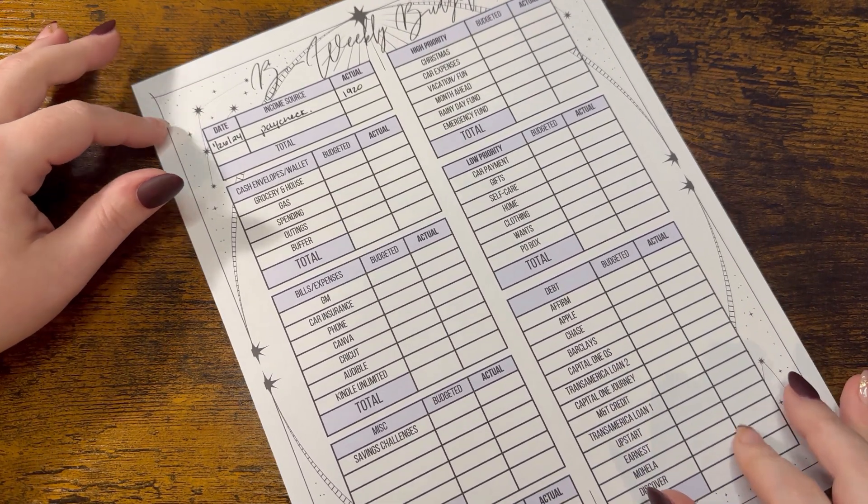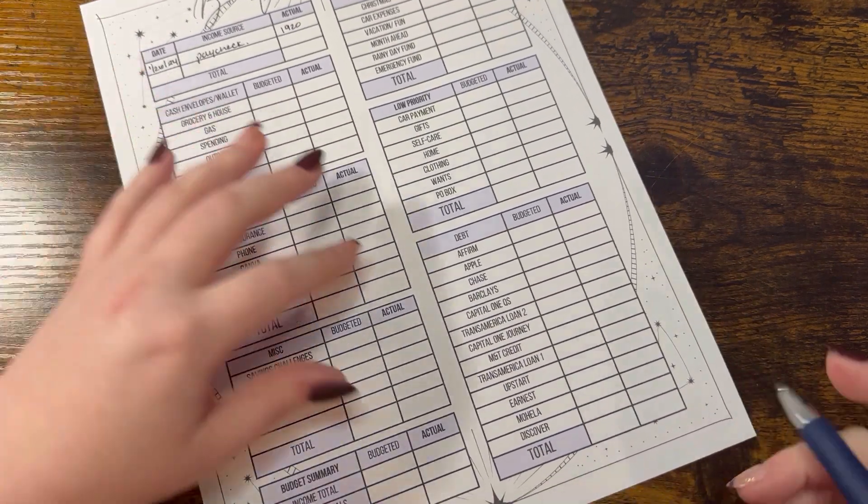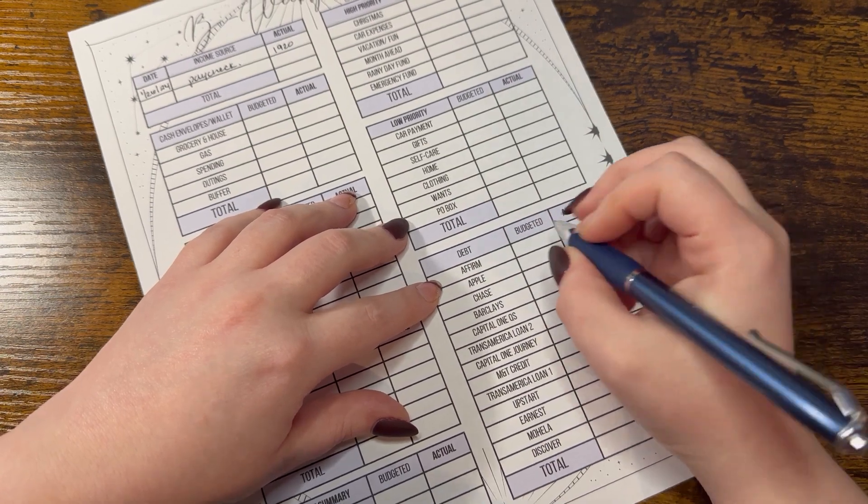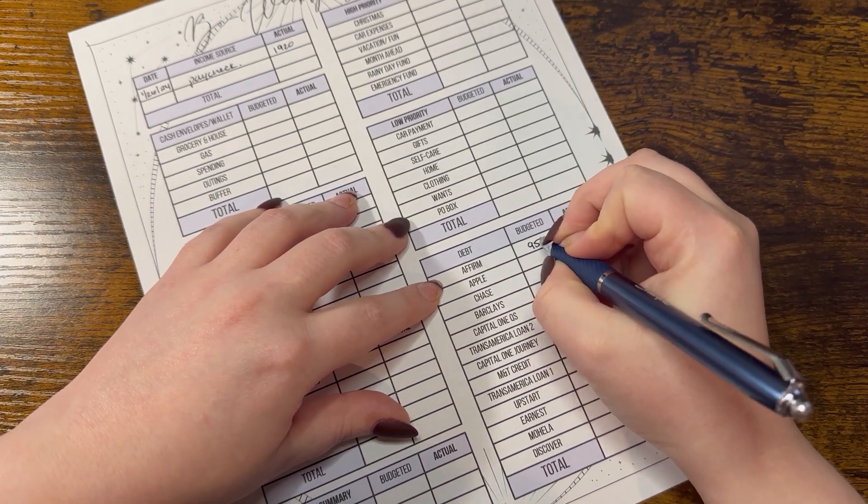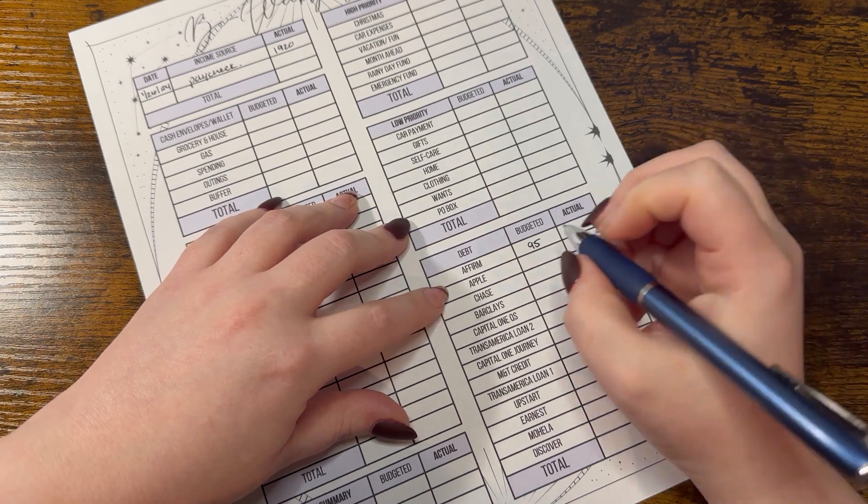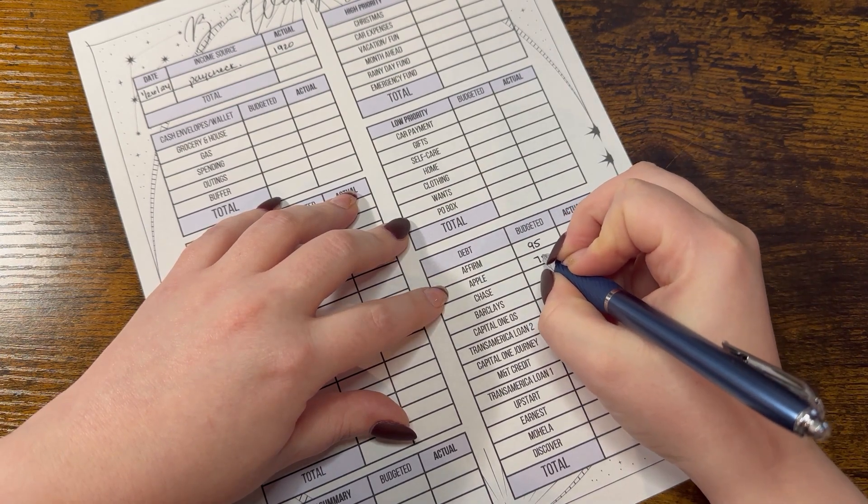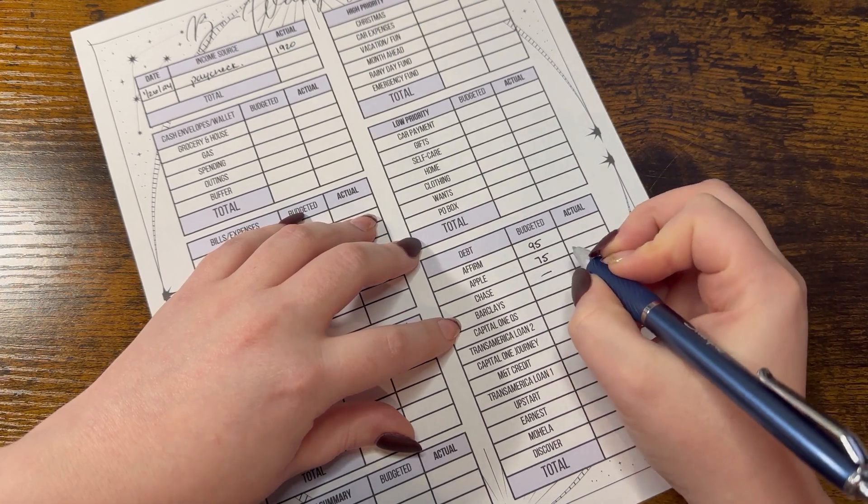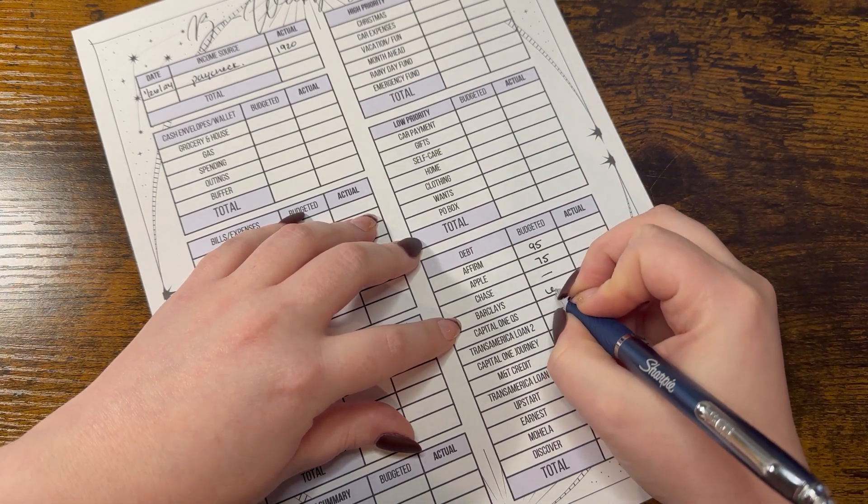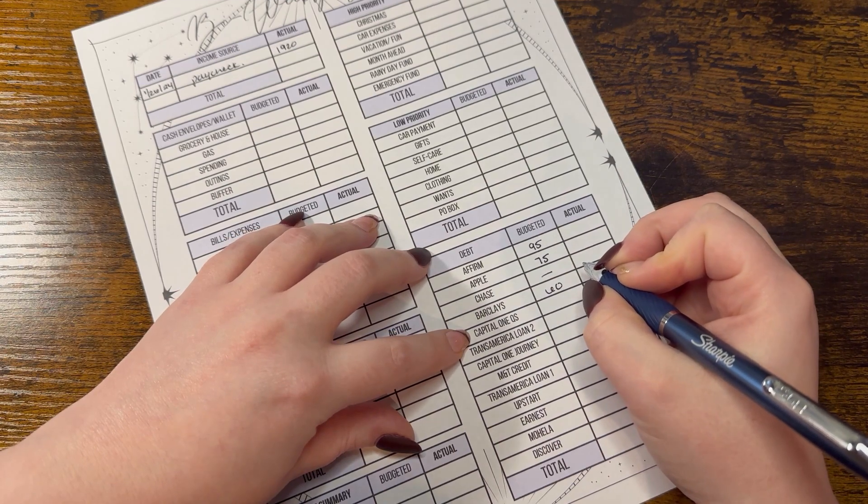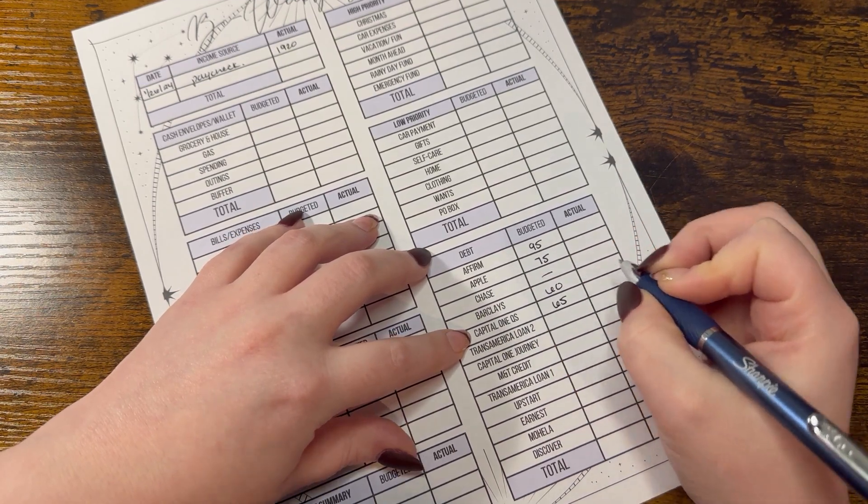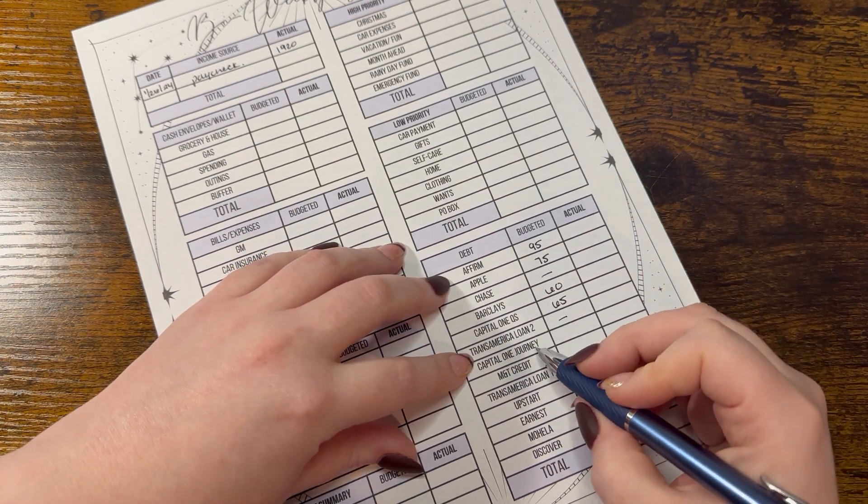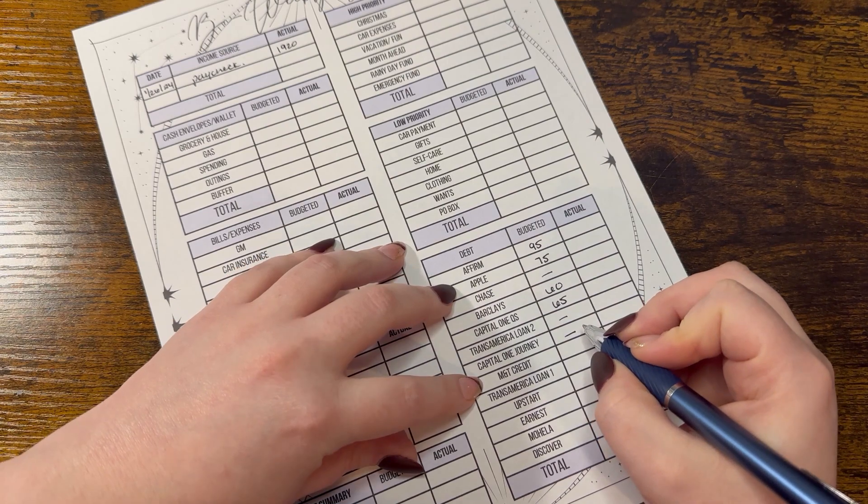So I'm going to start with my bills. Affirm this check gets $95. Apple gets $75. Chase gets nothing this check. Barclays gets $60. Capital One gets $65. Transamerica is taken out automatically.